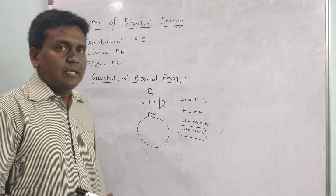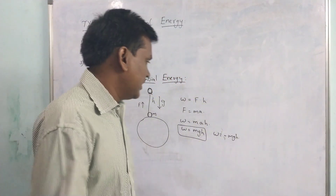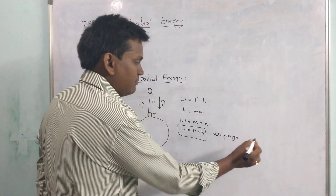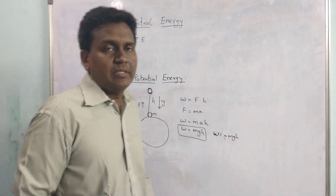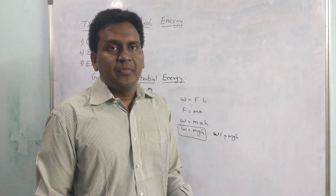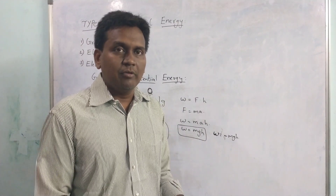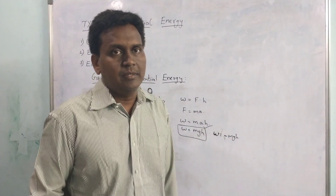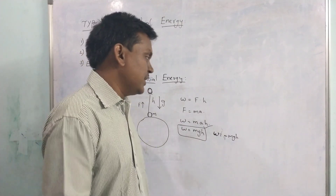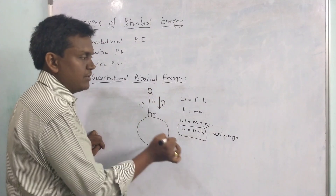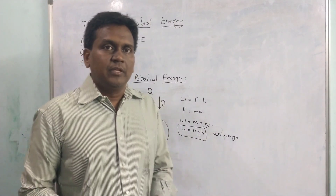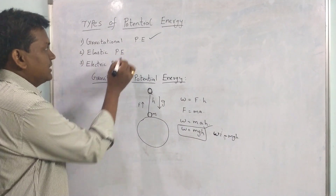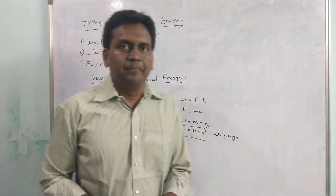The work done will be equal to mgh. The work done by gravity will be negative, equal to W = minus mgh. The work done against gravity — that means if you are lifting a body from the ground, the work is done against gravity — will be positive, W = mgh. If the work is done by gravity, meaning a body is falling due to gravity, then the work done will be minus mgh. This is about gravitational potential energy. In coming classes we will discuss elastic potential energy and electric potential energy. Thank you.